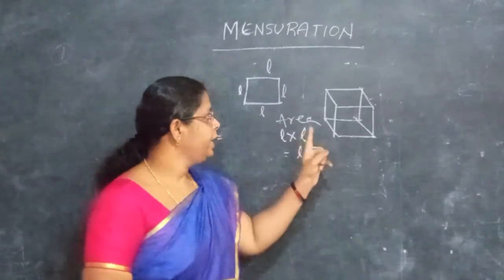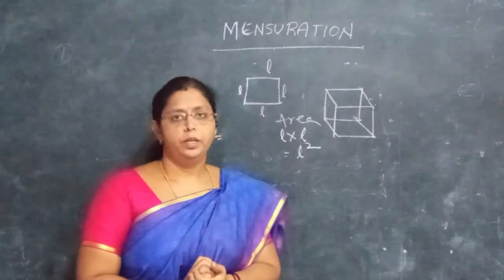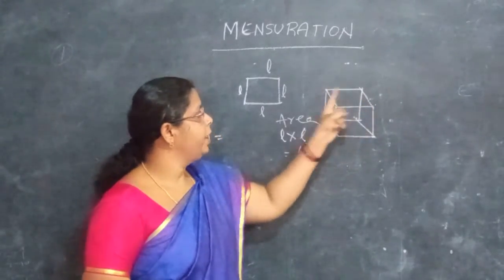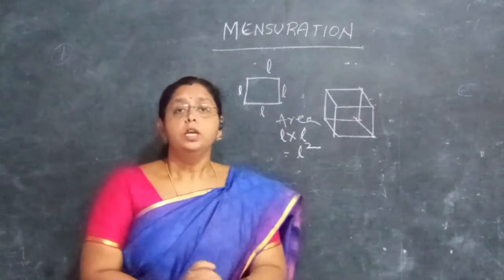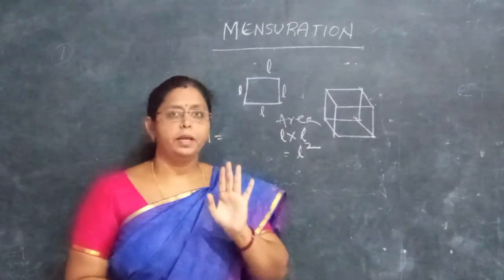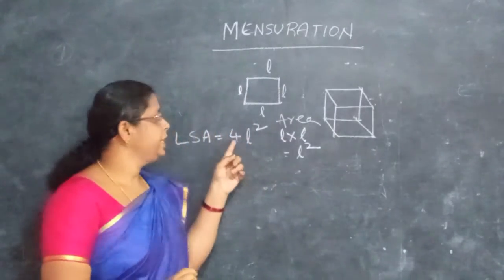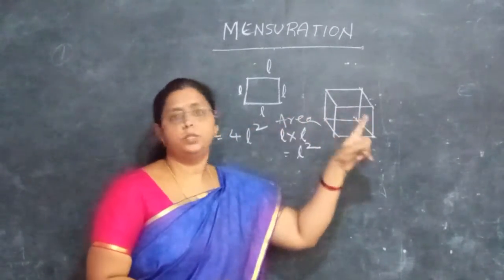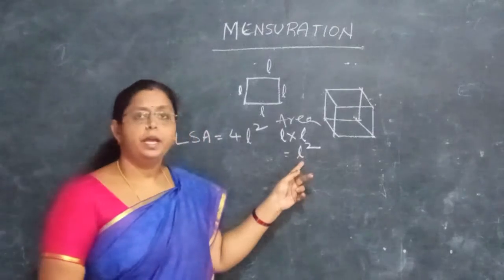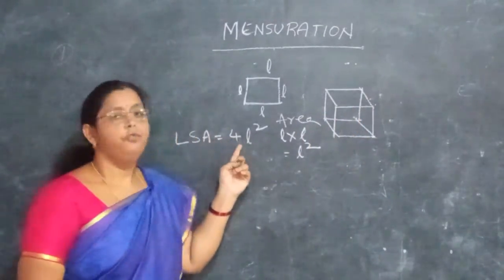So, lateral surface area. Here, the front side is a square, back side is a square, left side is a square — if any side is a square, the square area formula is L squared. So, lateral surface area equals 4L squared, because there are 4 sides.